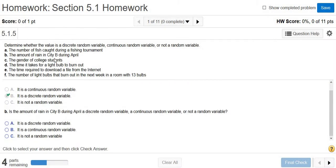The amount of rain in city B during April. So rain, we can't really count the amount of rain. It could be a decimal. So it's going to be continuous.